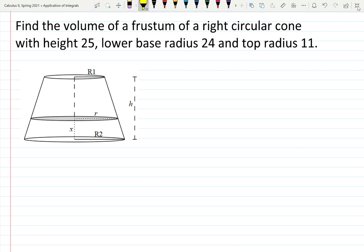I actually don't recognize this English word and I checked it in Russian. Here is the picture I found, so that's good enough to know what is happening. The height is 25, so h is 25. They gave us two radii: the smaller radius is 11, the lower base is 24. So R1 is 11, R2 is 24.